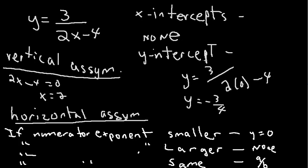Y-intercept, you set your denominator equal to 0. Because in this particular function, you want to know when is this particular function going to cross the y-axis.